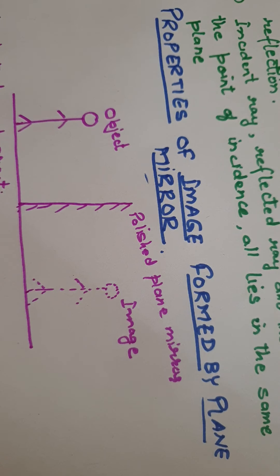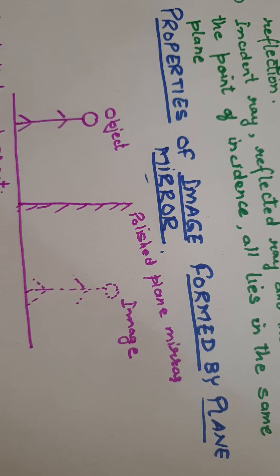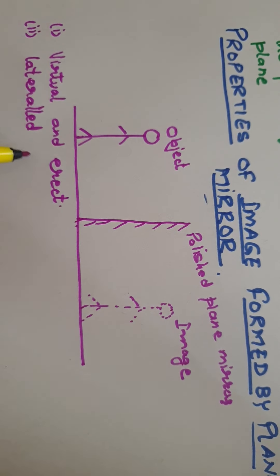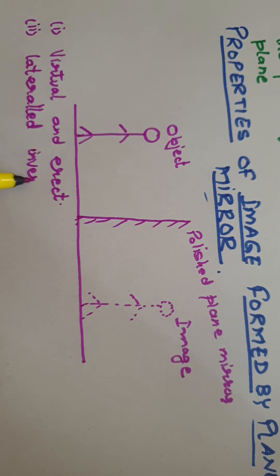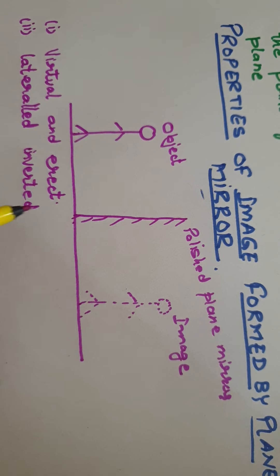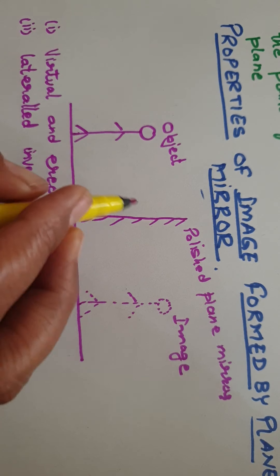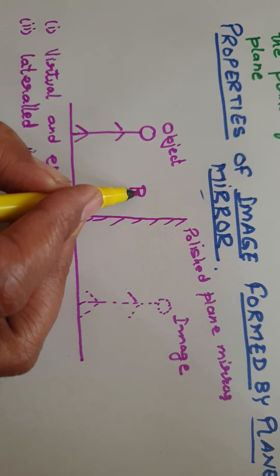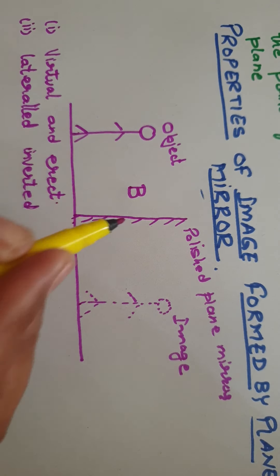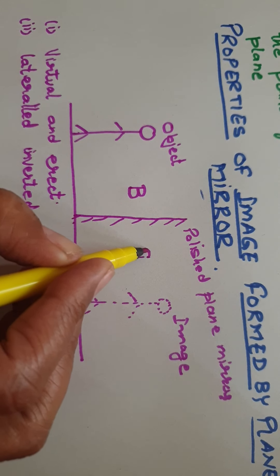The second property of image formed by a plane mirror is that the image is laterally inverted. It means if we see our right hand in the plane mirror, we get the image of it as a left hand. If we write the letter B and see it in the plane mirror, we get a laterally inverted image.